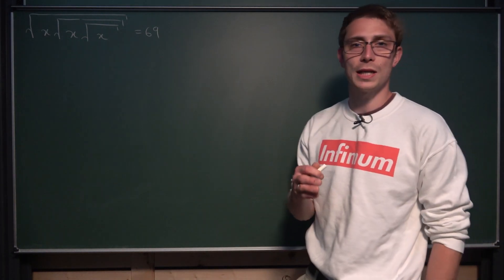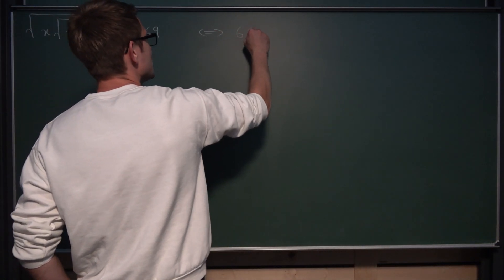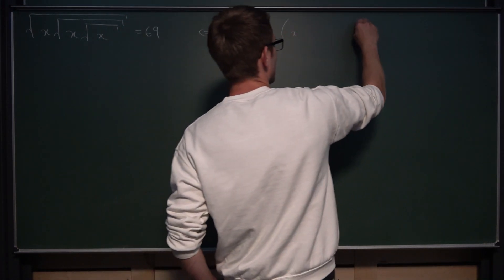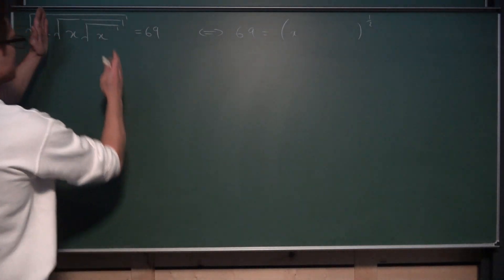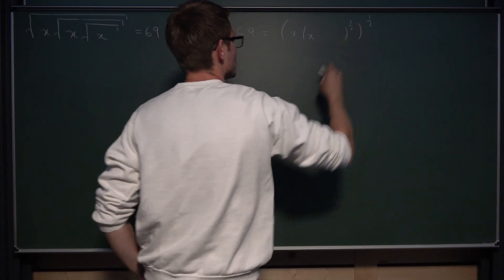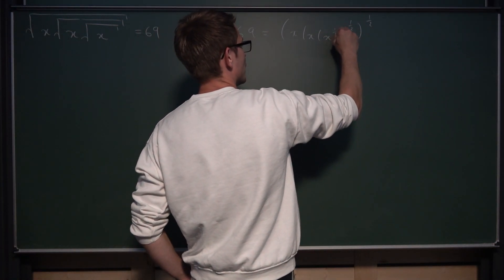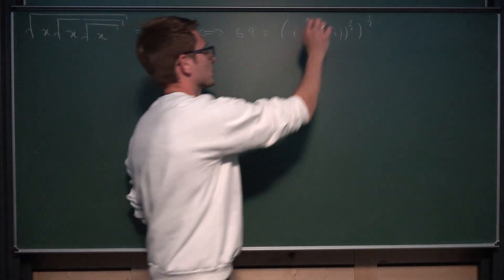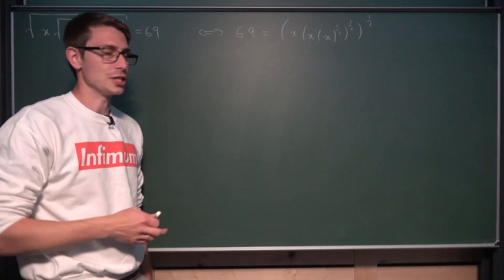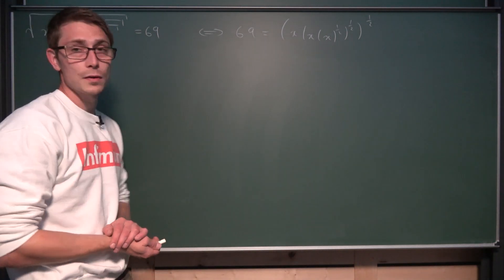I would like to rewrite the square root as being to the one-half power. So we can equivalently rewrite this as 69 being equal to — always put parentheses — this is our outer square root to the one-half power, then we have the next square root part: x times blah blah blah to the one-half power. And then we have the inner square root, which is x to the one-half power. I'm going to bring the one-half to the outside to keep the notation nice and fluent.